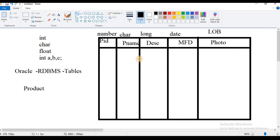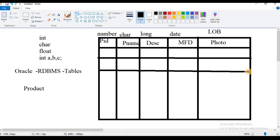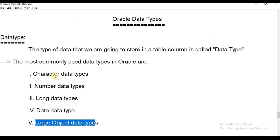We can insert values corresponding to the data type and get data based on the columns. We have covered the main Oracle data types and their subtypes. We will give you a practical example in our further sessions. Thank you for watching.